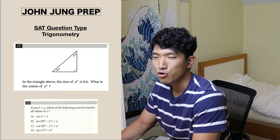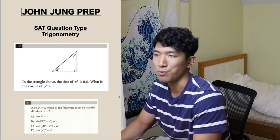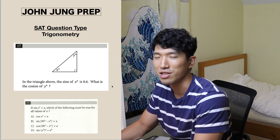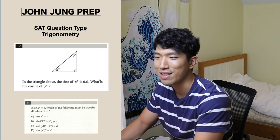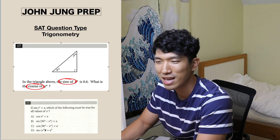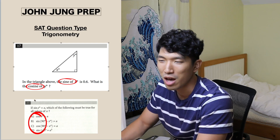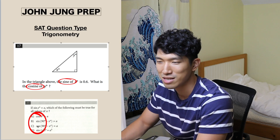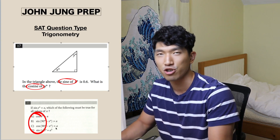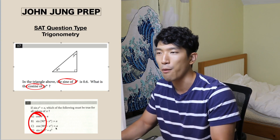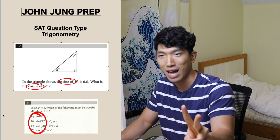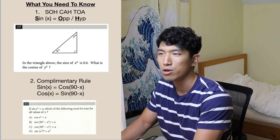All right, let's get started. Trigonometry questions — what do they look like? How can you tell whether it's a trigonometry question? There is a super big indicator: they use the word sine or cosine in the question. Whenever you see cosine or sine, that is going to be a trigonometry question. And when it comes to these questions, you only have to know two types.